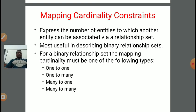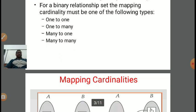Mapping cardinality is most useful in describing binary relationship sets. For a binary relationship set, the mapping cardinality must be one of the following types: one to one, one to many, many to one, or many to many.